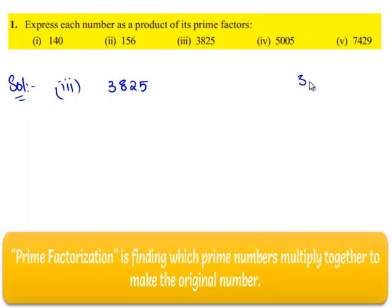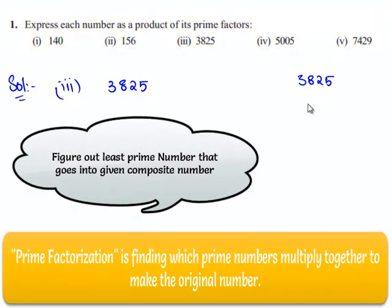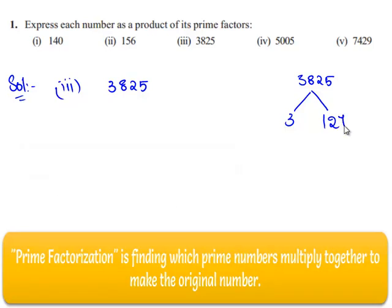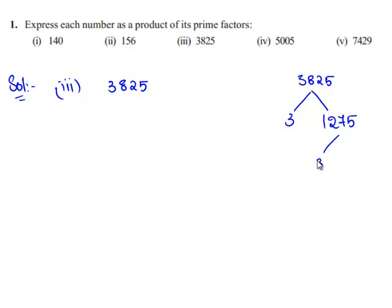we shall factorize it. The least number that goes in 3825 is 3. Therefore, this can be written as 3 times 1275. 1275 can be written as 3 times 425 and 425 can be written as 5 times 85, and 85 can be written as 5 times 17.